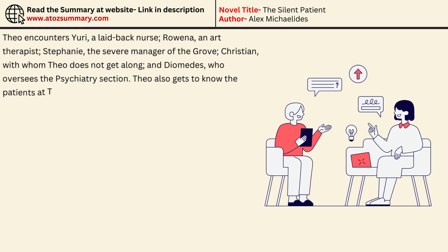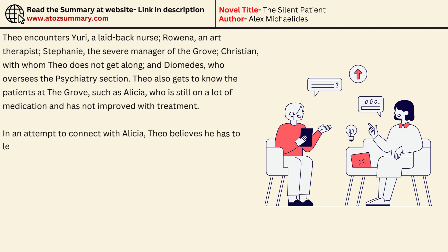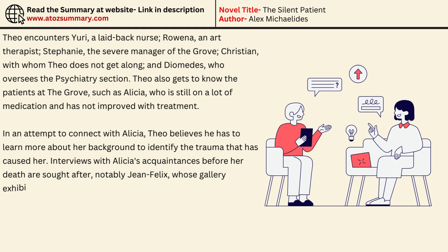Theo also gets to know the patients at the Grove, such as Alicia, who is still on a lot of medication and has not improved with treatment. In an attempt to connect with Alicia, Theo believes he has to learn more about her background to identify the trauma that has caused her silence. Interviews with Alicia's acquaintances are sought after, notably Jean Felix, whose gallery exhibited Alicia's artwork.